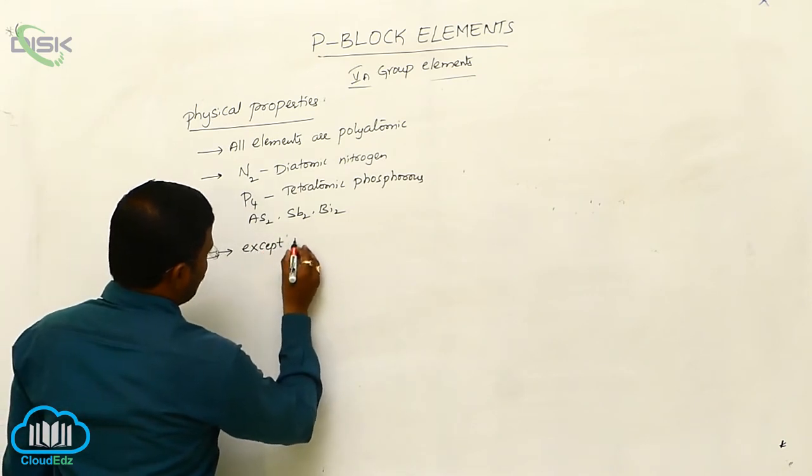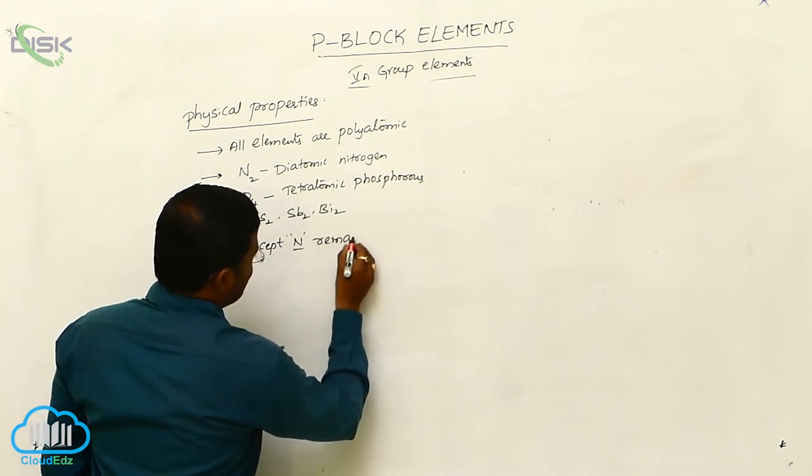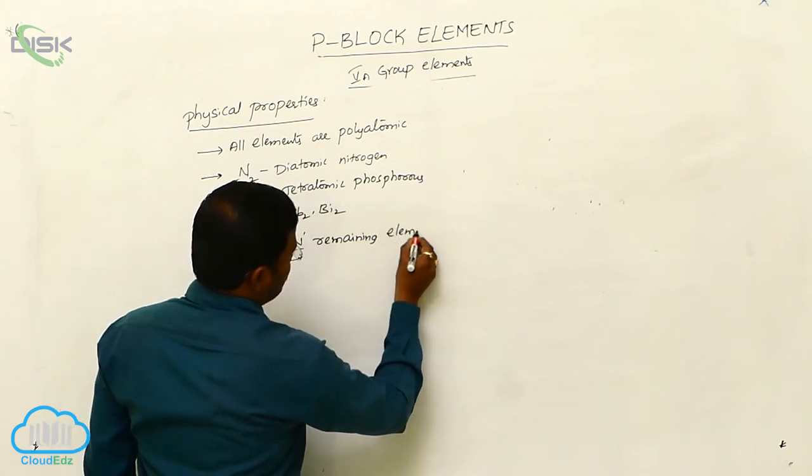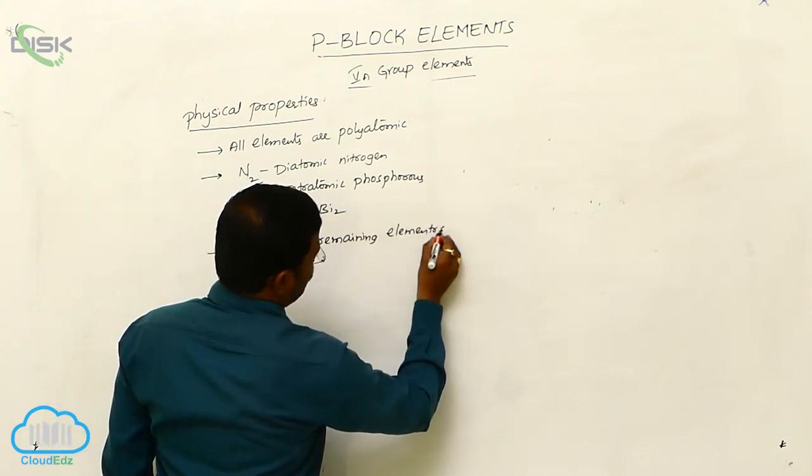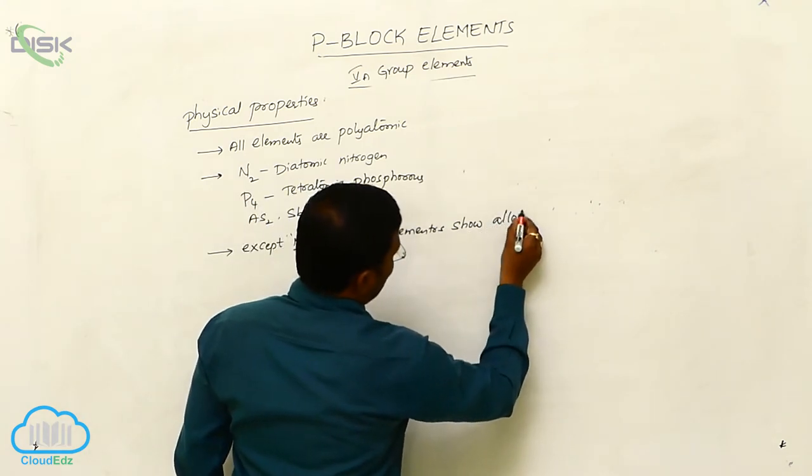Except nitrogen, remaining elements of the same group, remaining elements, show allotropism or allotrope.